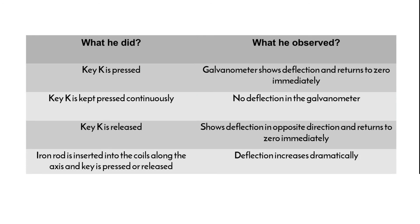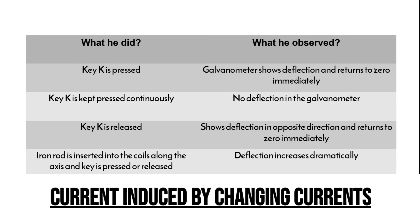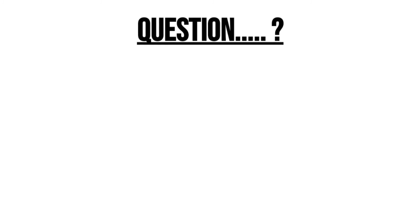When he inserted an iron rod into the coils along the axis and the key was pressed or released, the galvanometer deflection increased dramatically, meaning the current induced at that time is very large. This concludes experiment number three — current induced by changing currents.